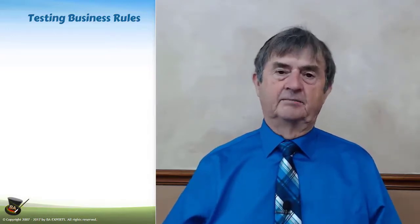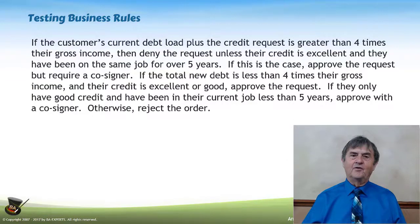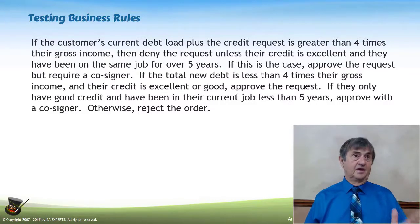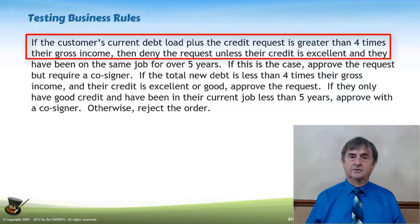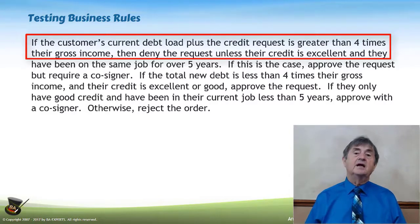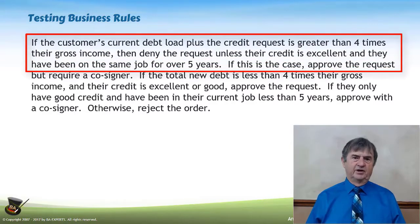Business rules give me that ability. Here's an example of a poorly formed business rule — it gives you an example of the typical kinds of business rules that we deal with. If a customer's current debt load plus the credit request is greater than four times their gross income — so we're dealing with a customer buying something on credit who already has a debt — then deny the request, unless their credit is excellent and they've been on the same job for over five years.